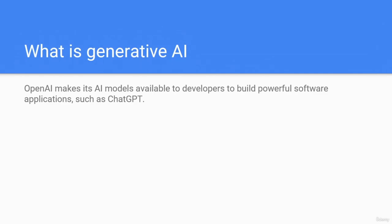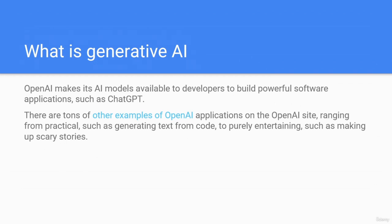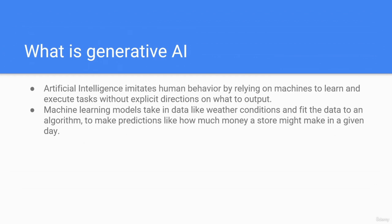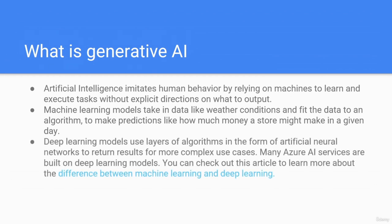What is Generative AI? OpenAI makes its AI models available to developers to build powerful software applications such as ChatGPT, ranging from practical uses like generating text from code to purely entertaining ones. Artificial intelligence imitates human behavior by relying on machines to learn and execute tasks without explicit directions. Machine learning models take in data and fit it to an algorithm to make predictions. Deep learning models use layers of algorithms in the form of artificial neural networks to return results for more complex use cases, and many Azure AI services are built on deep learning models.